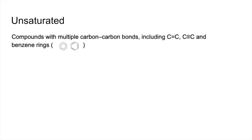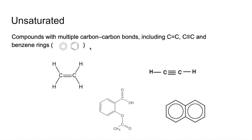Unsaturated — these are compounds with multiple carbon-carbon bonds, so that includes carbon-carbon double and carbon-carbon triple bonds, and also benzene rings. You can see in the brackets two representations we use for benzene: a hexagon with a circle in the middle, or a hexagon with alternating carbon-carbon double and single bonds — three of each type, alternating. There are some examples of those.